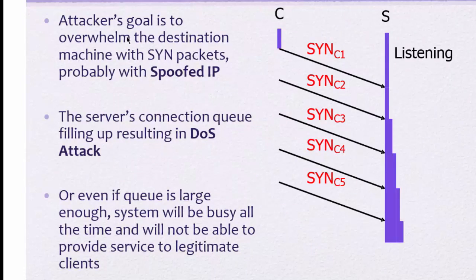Here you are seeing, attacker's goal is to overwhelm the destination machine with SYN packets, probably with spoofed IPs. So here is the client as I told you in the previous slide. Here is the client, it sent a SYN message to the server. Now here is a SYN message and now the server wants to reply back on this SYN request that is C1. But what happens is the server is in waiting time.